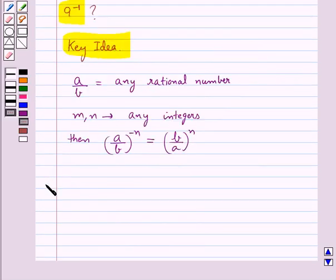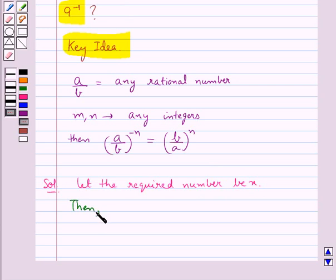Now, let us move on to the solution. Let the required number be x. Then we have (-8)^(-1) × x = 9^(-1).